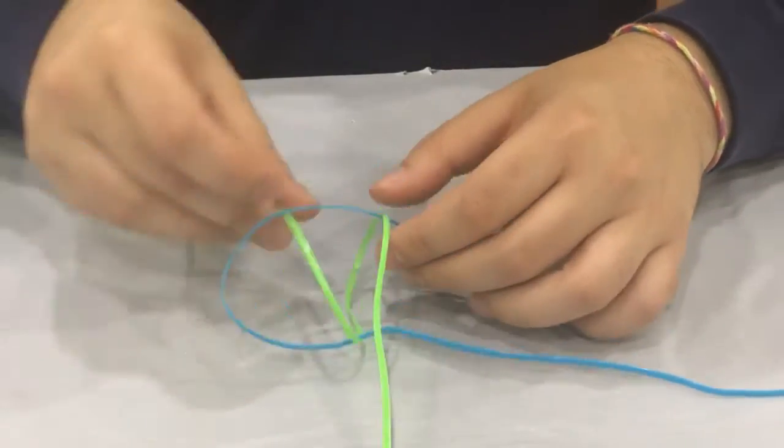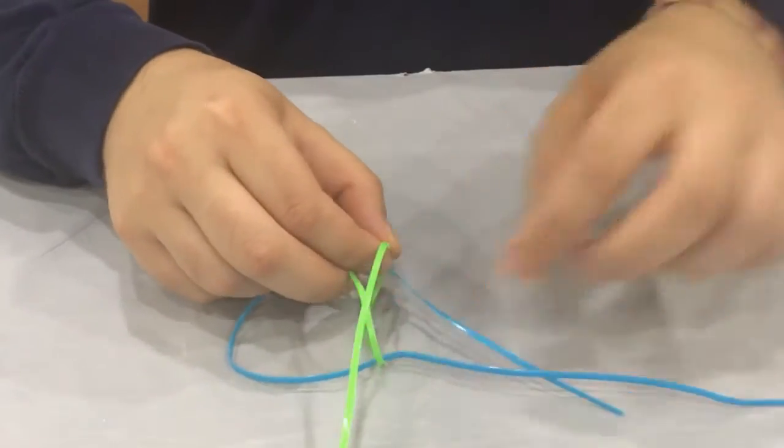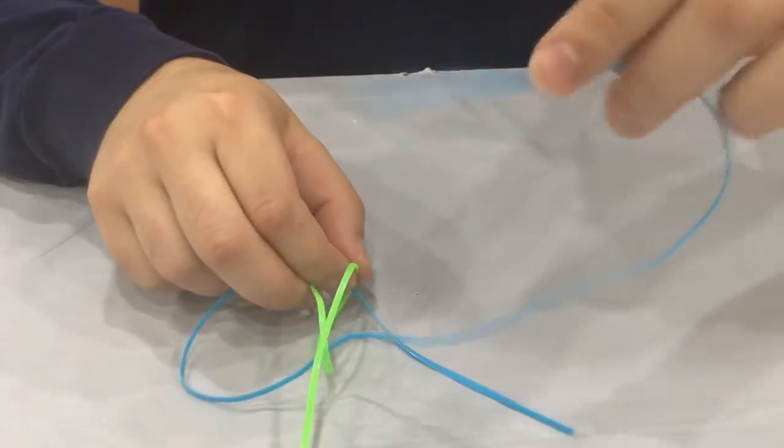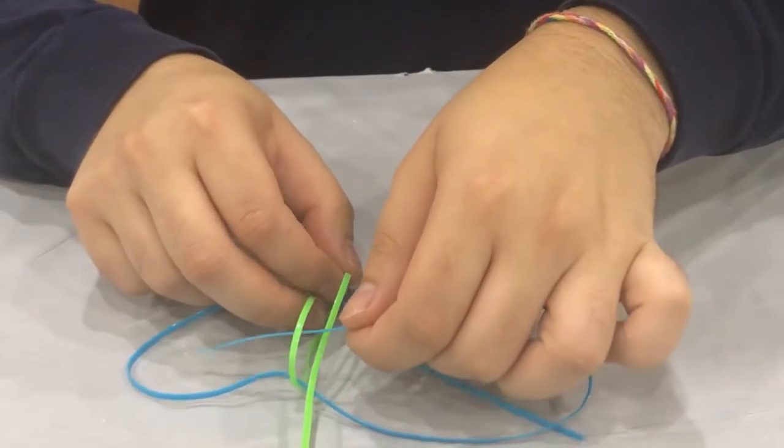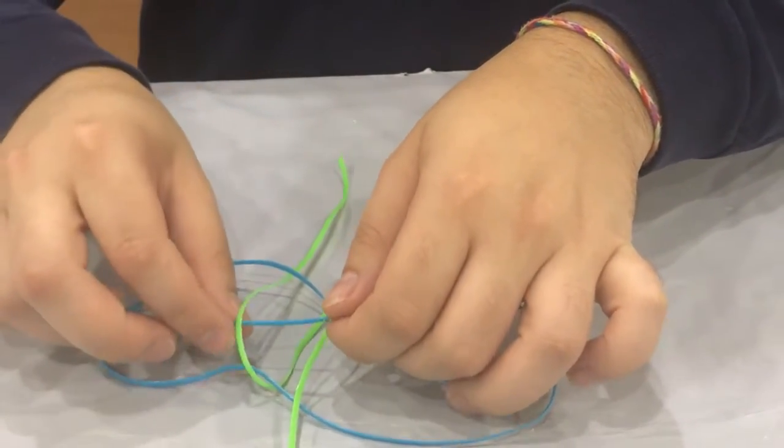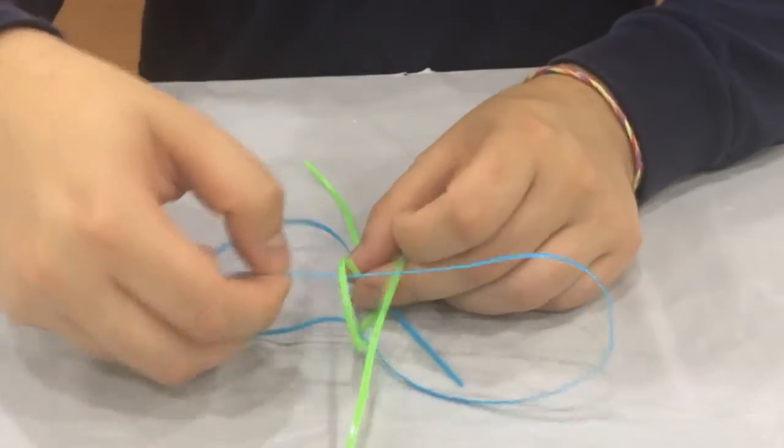So, and you're going to do the same with the other one. You're going to go over the right, you're going to take your right string, and you're going to go over the right loop and through the left loop. Or yeah, no, left, you take your left string and go through there.